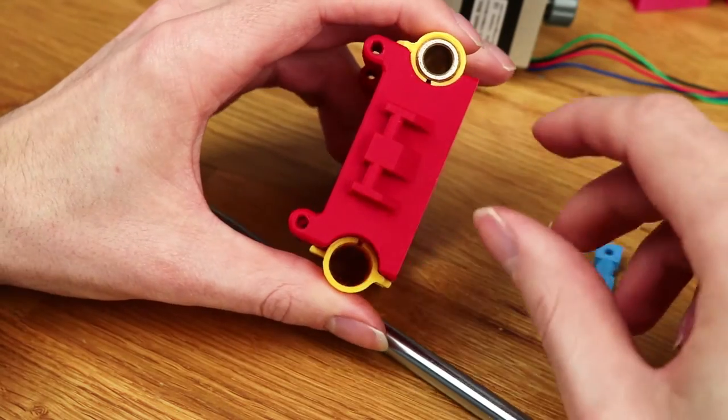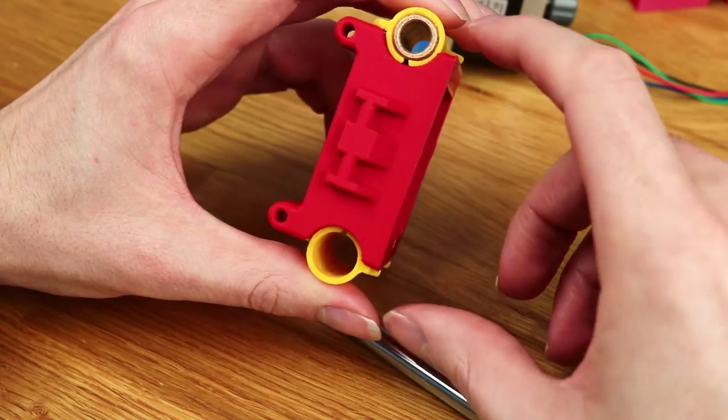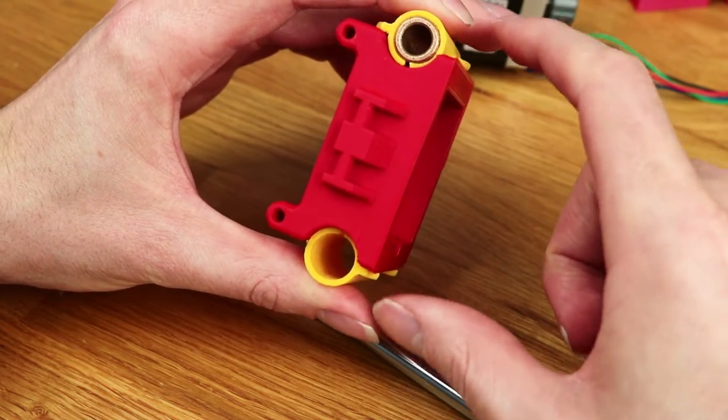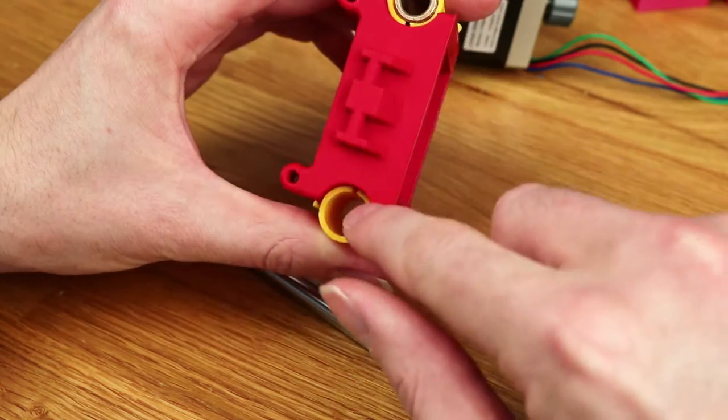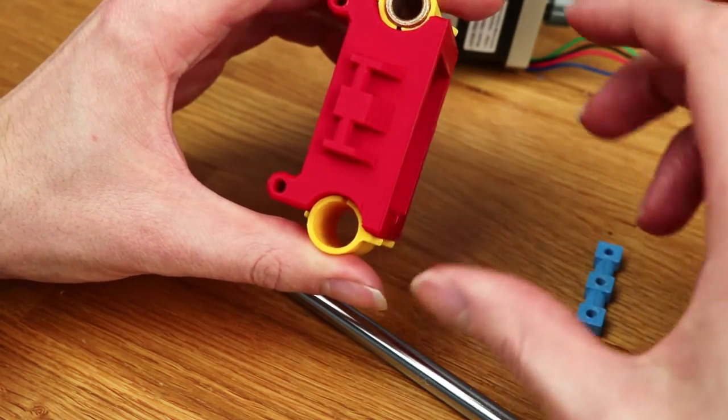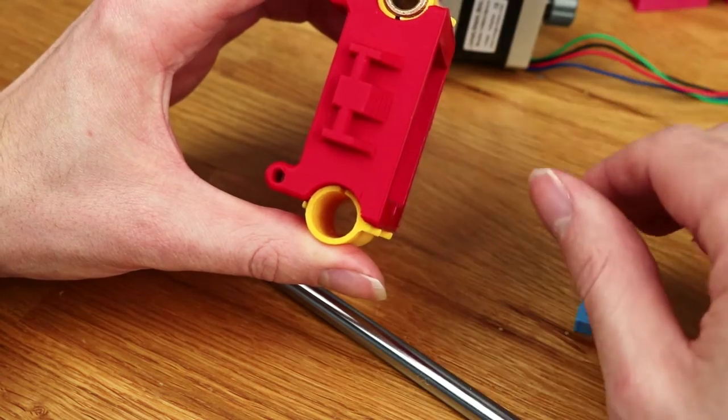The biggest problem with this design is the position of these bearings. In this orientation, as you tighten them down, it changes the distance between the bearings. If you change the distance between the bearings, the whole lot just clamps down and it doesn't go anywhere.